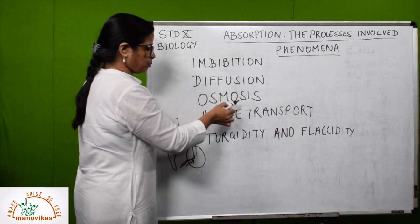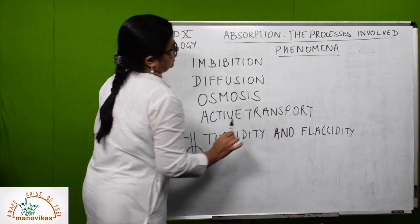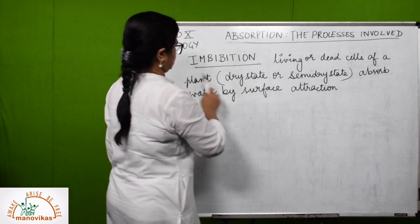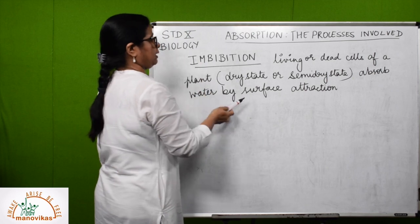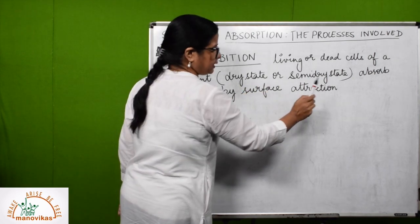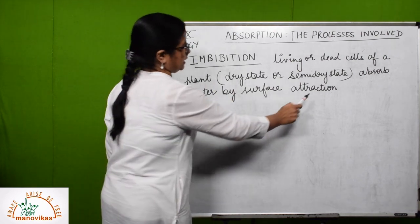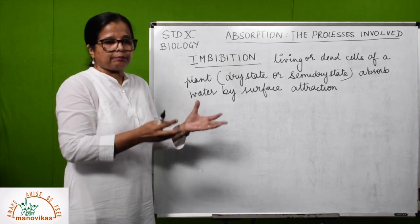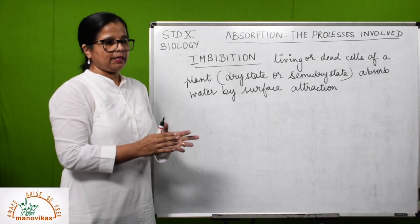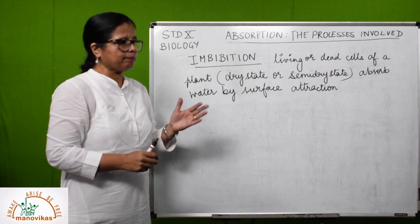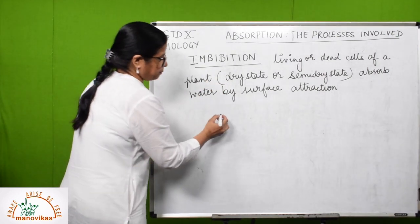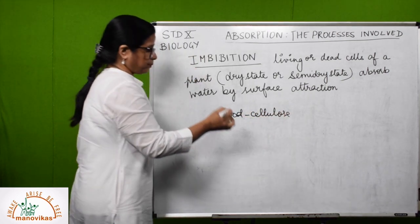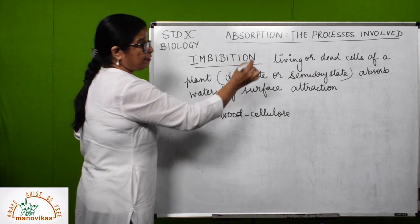Let us study the first phenomenon: imbibition. Living or dead cells of a plant — whether in a dry or semi-dry state — absorb water by surface attraction. For example, during the monsoons, doors and windows with wooden frames get warped — they become bigger in size and are difficult to open or close. Why? Because the wood contains cellulose, and this cellulose has an affinity for water — it attracts water molecules, causing the wooden frames to swell.